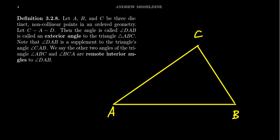This definition will make sense in an order geometry. The exterior angle theorem will be a theorem of congruence geometry because it says something about the relative size of these angles. We need a notion of congruence to say something about that. But the definition of an exterior angle and interior angles makes sense in any order geometry.